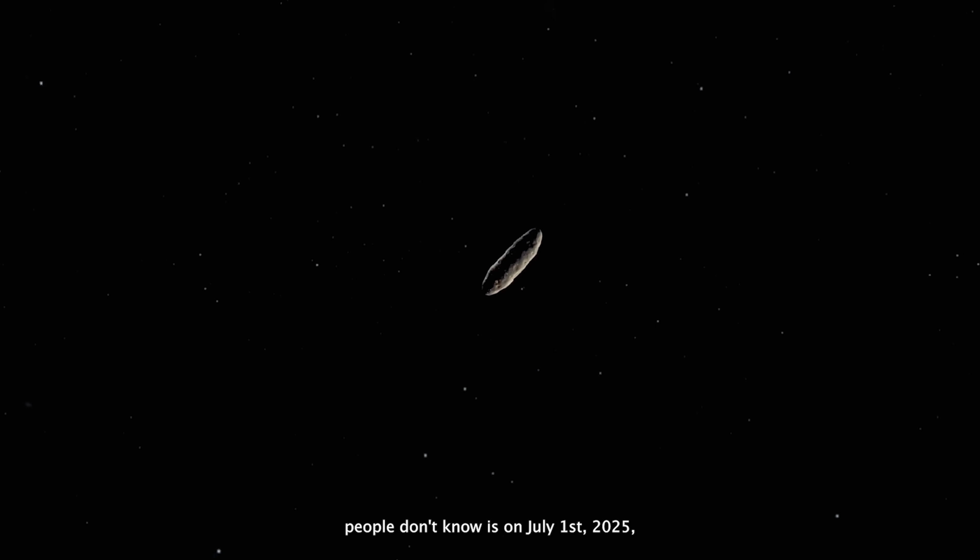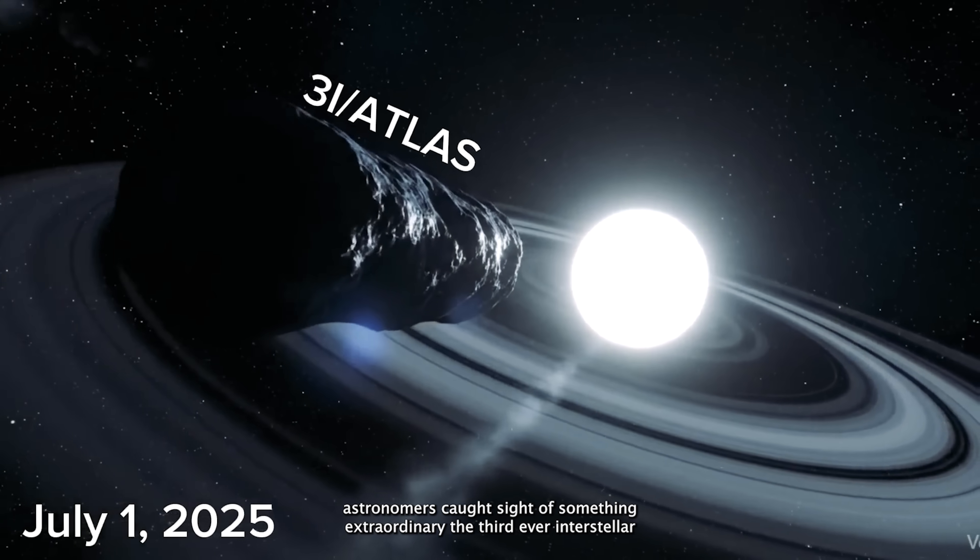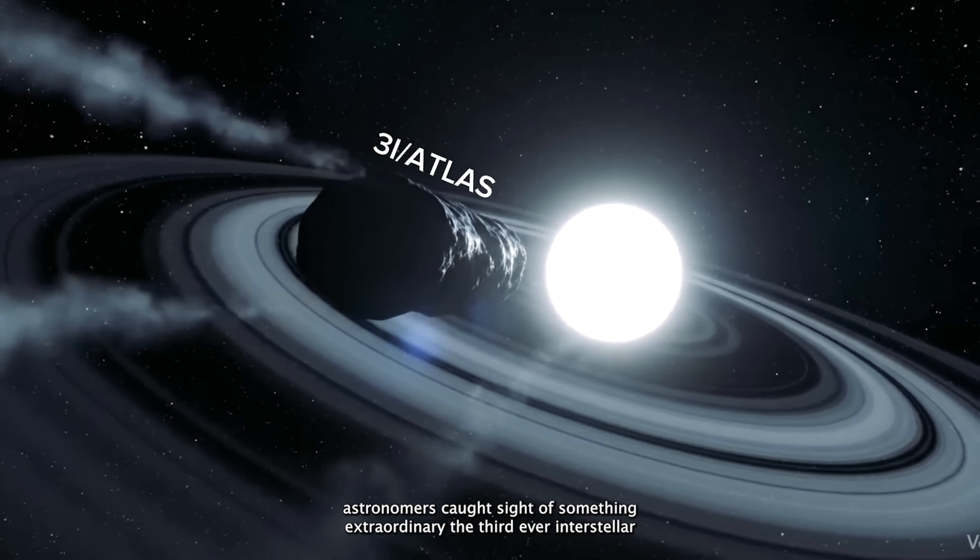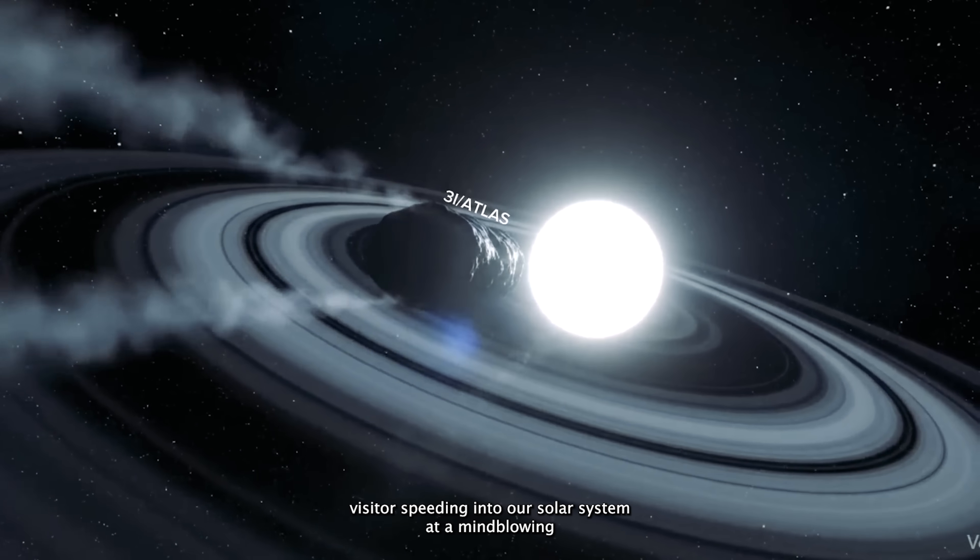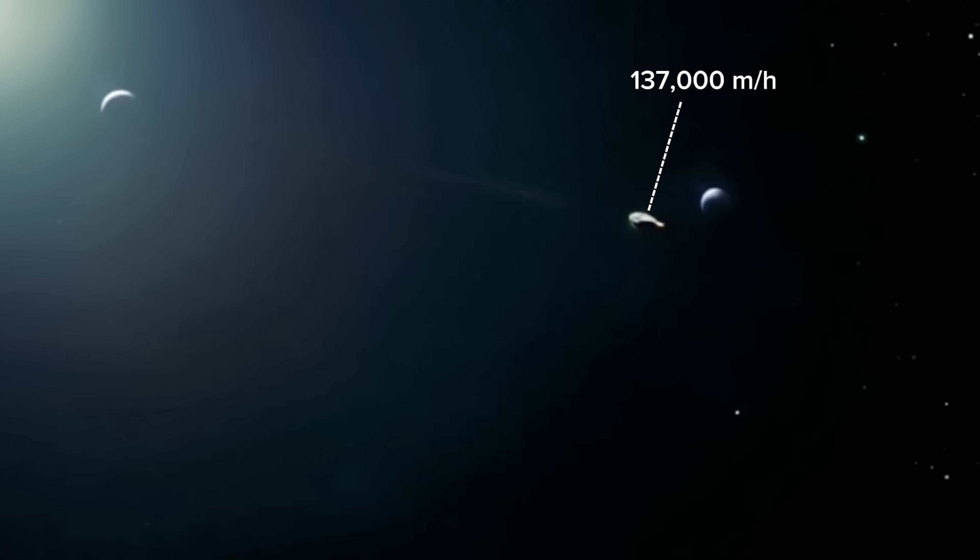You see, what most people don't know is, on July 1st, 2025, astronomers caught sight of something extraordinary, the third ever interstellar visitor, speeding into our solar system at a mind-blowing 137,000 miles per hour.